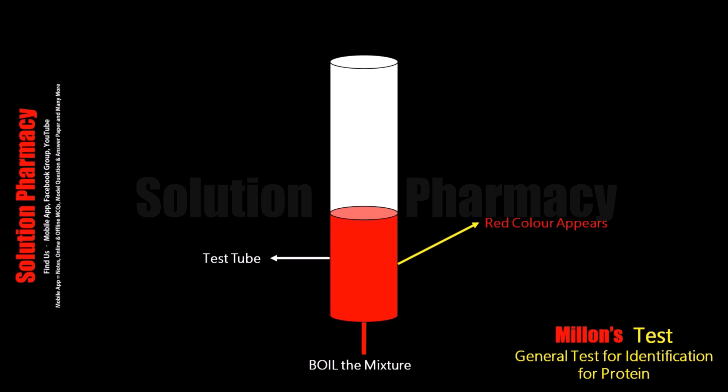When we add Millon's reagent to the test solution, the reagent precipitates the protein present in the test solution, and a white color precipitate forms in the test tube. When we heat the test tube in the water bath, it combines with the tyrosine, and a red precipitate or red color solution forms in the test tube.